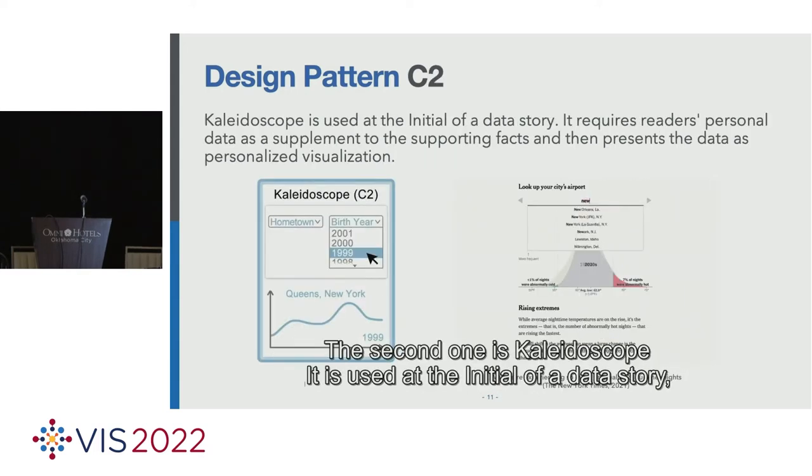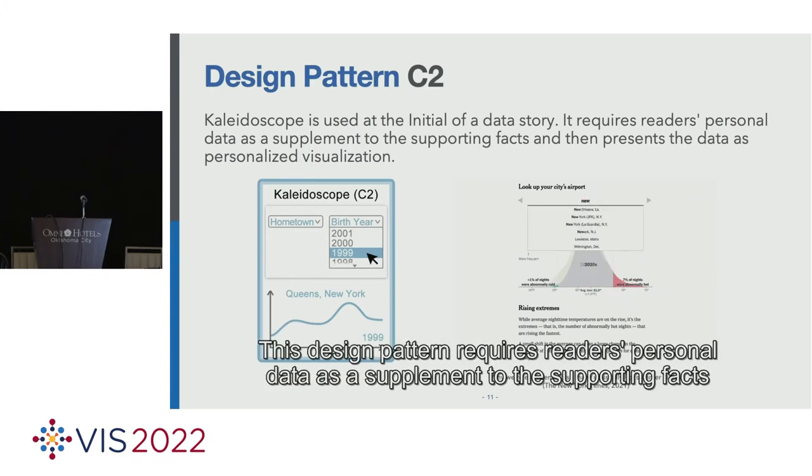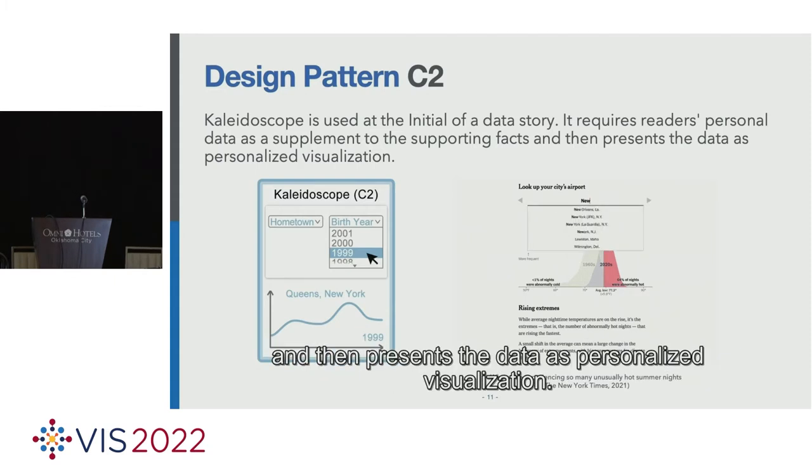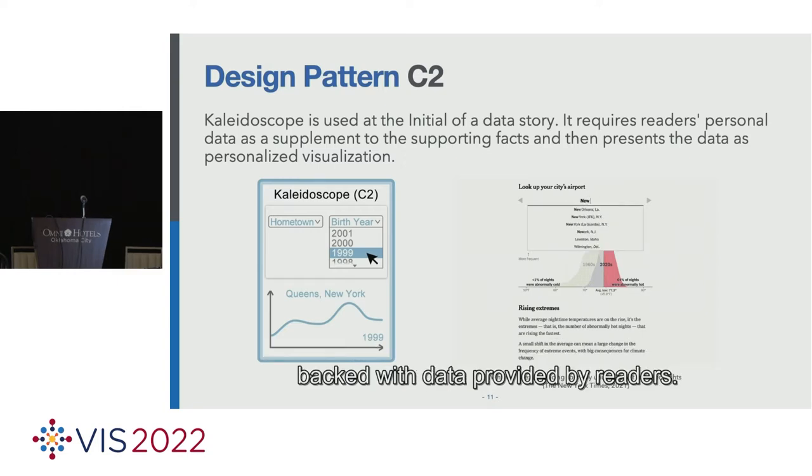The second one is collided scope. It is used at the initial of a data story, where supporting facts are provided to reveal deeper insights. This design pattern requires readers' personal data as a supplement to the supporting facts, and then presents the data as personalized visualization. It serves the intent of persuading by delivering more convincing arguments backed with data provided by readers.